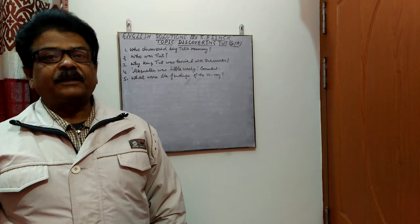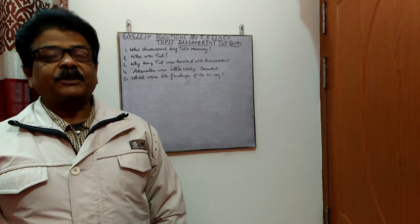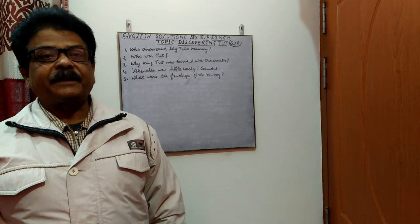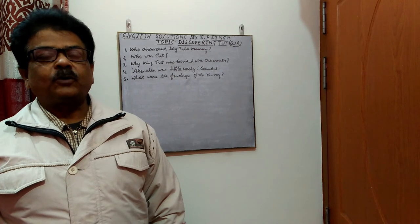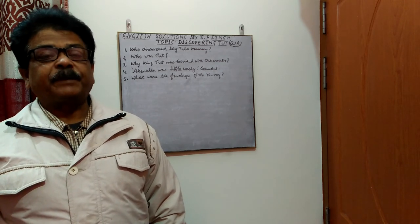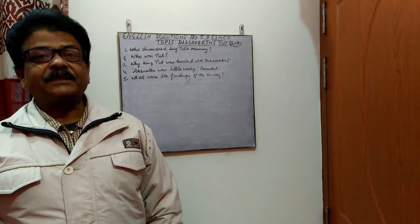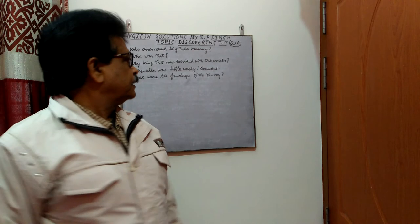He attacked the temples of the god Amun, stopped the worship of Amun, and changed the religious capital to Akhetaten, which is currently situated at the place of Amarna. So he had adopted very eccentric ways.